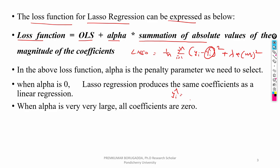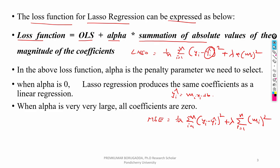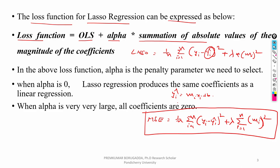Here ŷi is the predicted variable, which can be written as mi*xi + b. So the total loss function (mean square error) for lasso regression is: (1/n) * Σ(yi − ŷi)² + λ * Σmi². This is the total loss function for lasso regression.